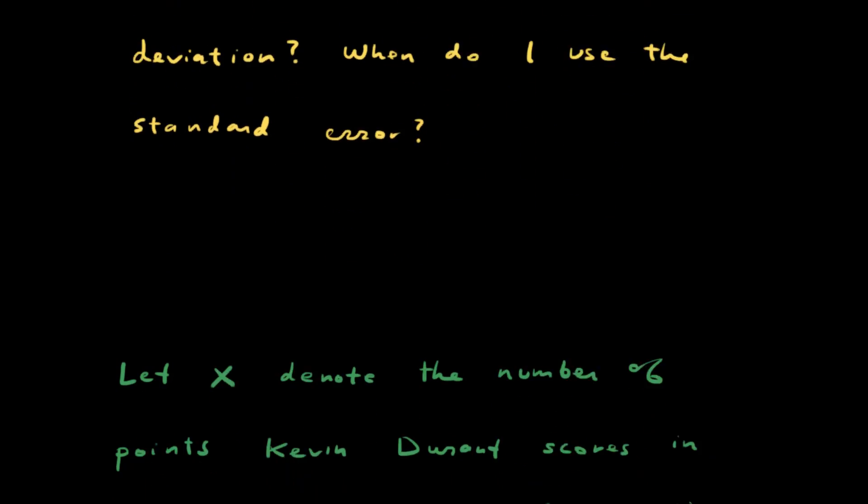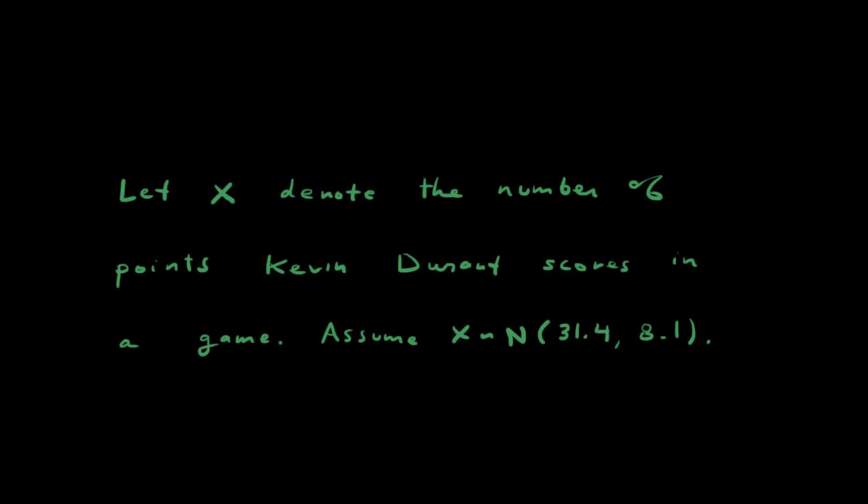I've got an example problem. Let X denote the number of points Kevin Durant scores in a game. Let's assume that X is normally distributed with a mean of 31.4 and a standard deviation of 8.1. This is actually accurate for this season so far.